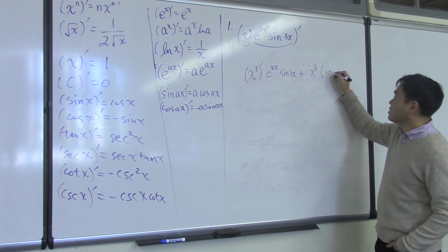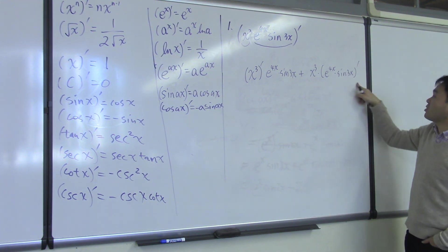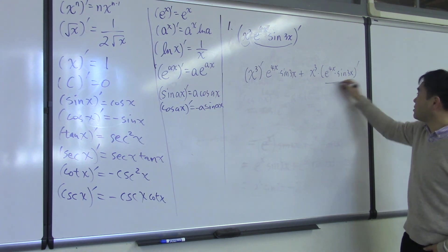So this differentiates and then e to the 4x times sine 3x, and plus x cubed times e to the 4x times sine 3x. And when you differentiate the second one, you have to use the product rule again.